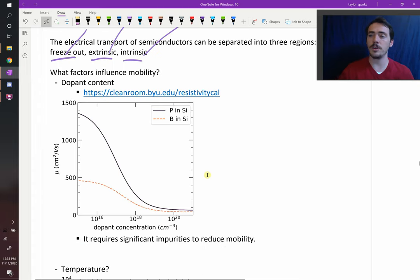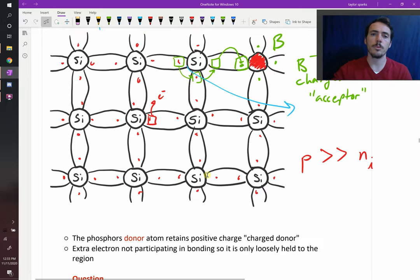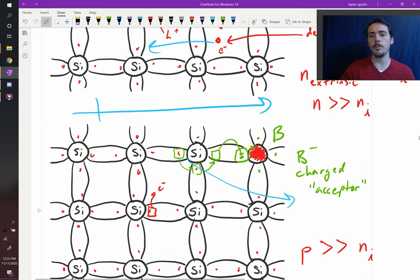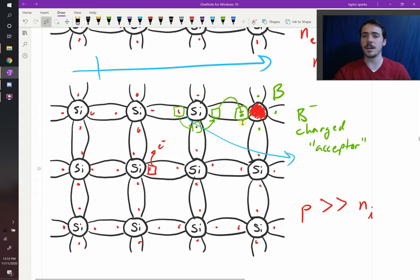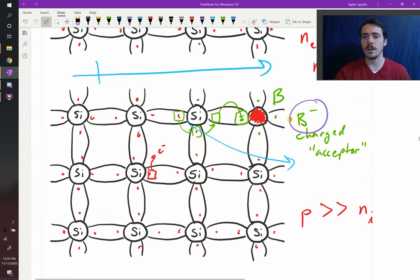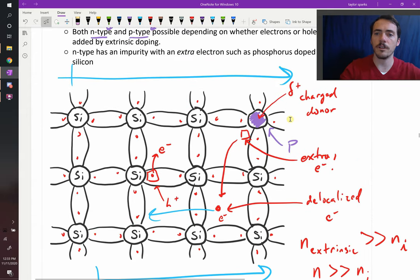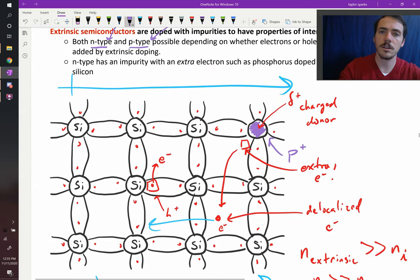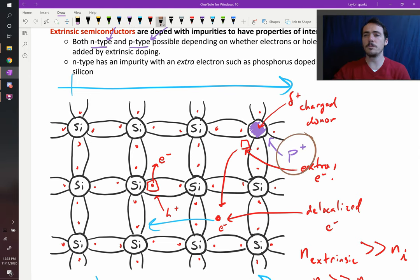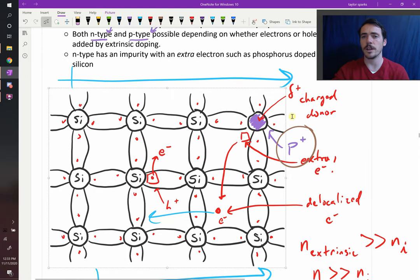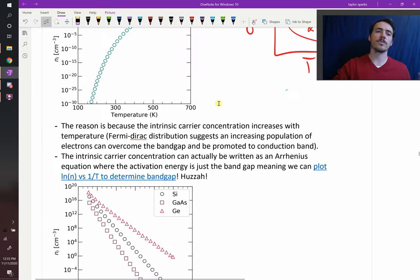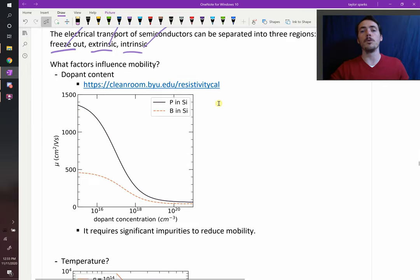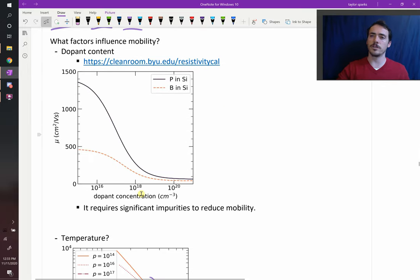Also remember that impurities themselves - when you doped it with boron, once it became ionized, it was an acceptor. Once it accepted an electron, now you have this B- ion in your lattice, which is an impurity. Same thing with phosphorus. Once it gives away its electron, now you've got P+ in the lattice, which is an impurity. So those impurities are also going to scatter your electrical carriers.